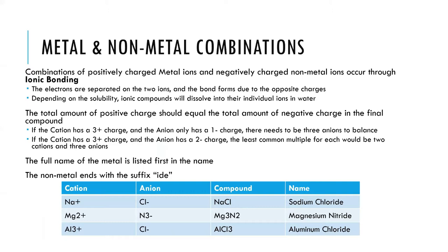You can look at these combinations of metals and non-metals coming together through electrostatic interaction — a positive charge and a negative charge. This is ionic bonding: two charged ions coming together and forming a bond, particularly just because opposites attract. These ionic bonds typically can dissolve in water, depending on their solubility. Things like sodium chloride, magnesium nitride, and aluminum chloride are ionic compounds that dissolve in water. And when they do dissolve, they are broken apart into their individual ions.